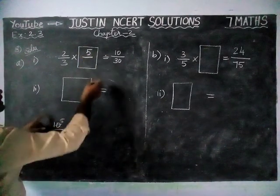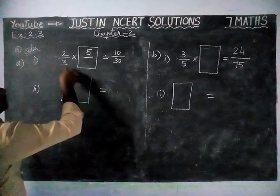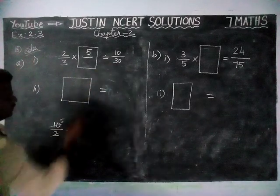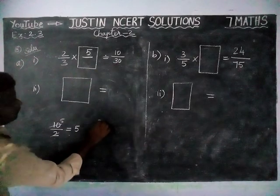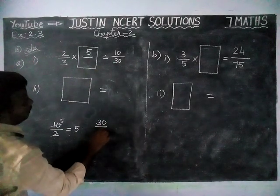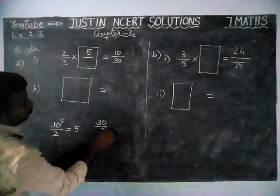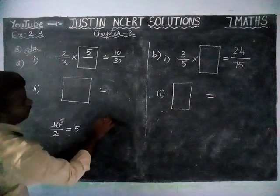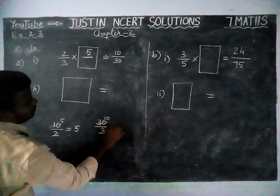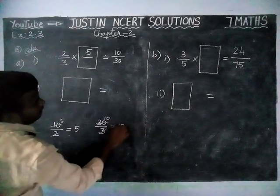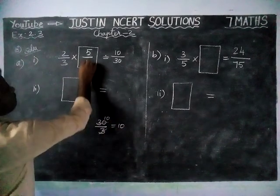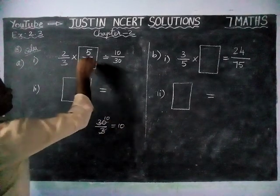Next, we are going to find the denominator. In denominator, we have 30 divided by 3. 3's are 30. So, denominator is 10.